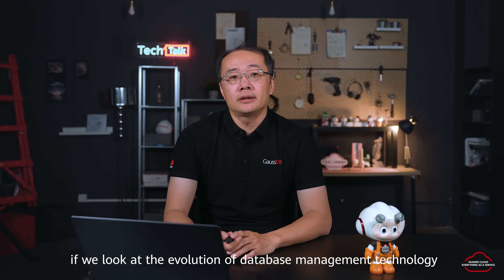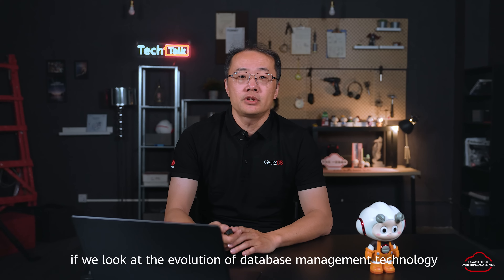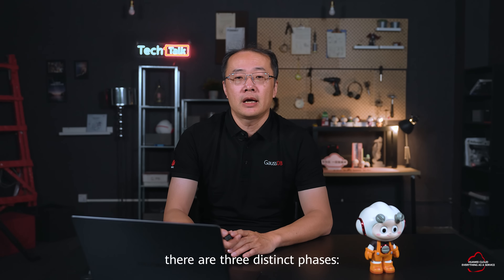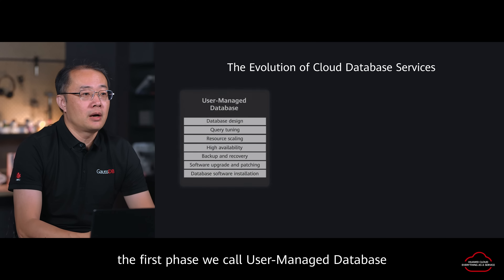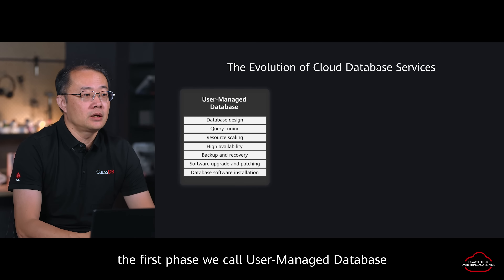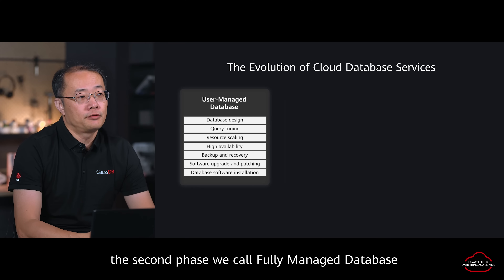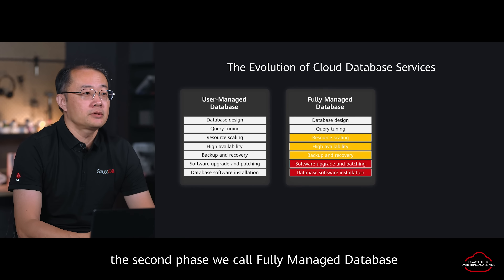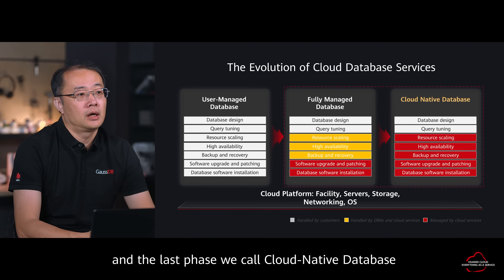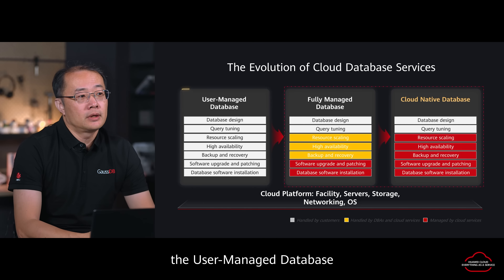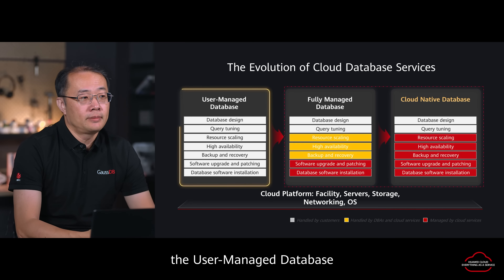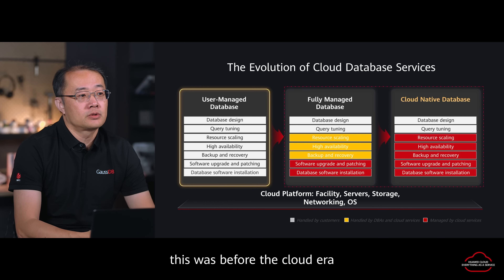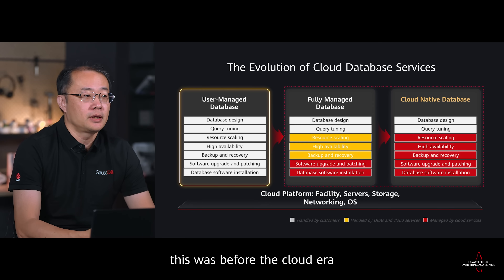If you look at the evolution of database management technology, there are actually three phases. The first phase we call user-managed database, the second phase we call fully managed database, and the last phase we call cloud native database. Phase one, the user-managed database, is essentially before the cloud era.